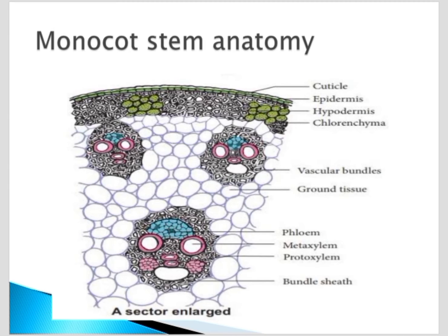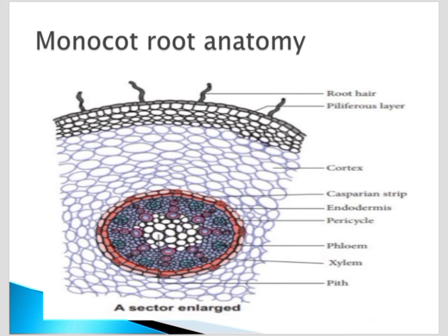The vascular bundles are surrounded by bundle sheath cells. Coming to the root of the monocot, root hairs are present for the absorption of water, and next is the epidermis layer, then the cortex. At the center we can see the stele. The endodermis contains casparian stripes at the corners, which are deposited with suberin in a vascular layer — this is a special character.